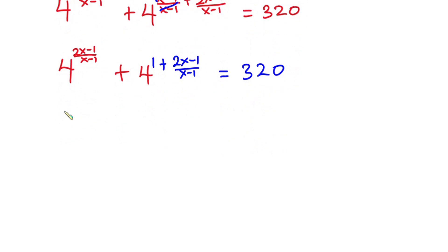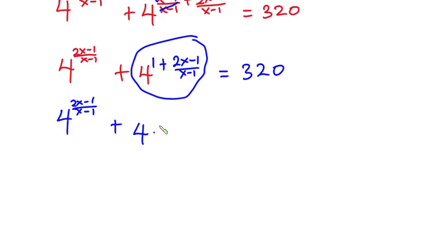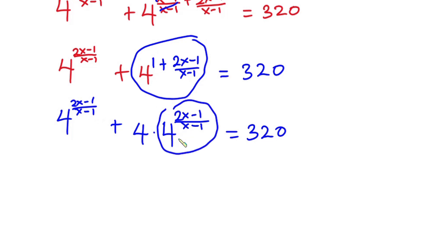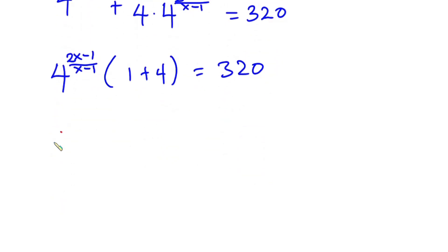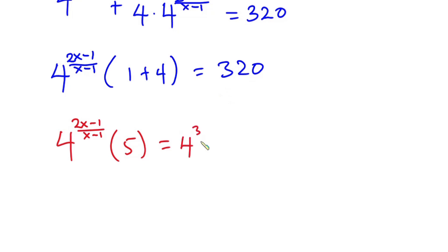So from here we have 4 to the power (2x minus 1) over (x minus 1), plus 4 to the power (2x minus 1) over (x minus 1), and this is equal to 320. Since the same term appears twice, we can factor it out. So we have 4 to the power (2x minus 1) over (x minus 1), times (1 plus 4), equals 320. Now 320 can also be written as 4 to the power 3 times 5.